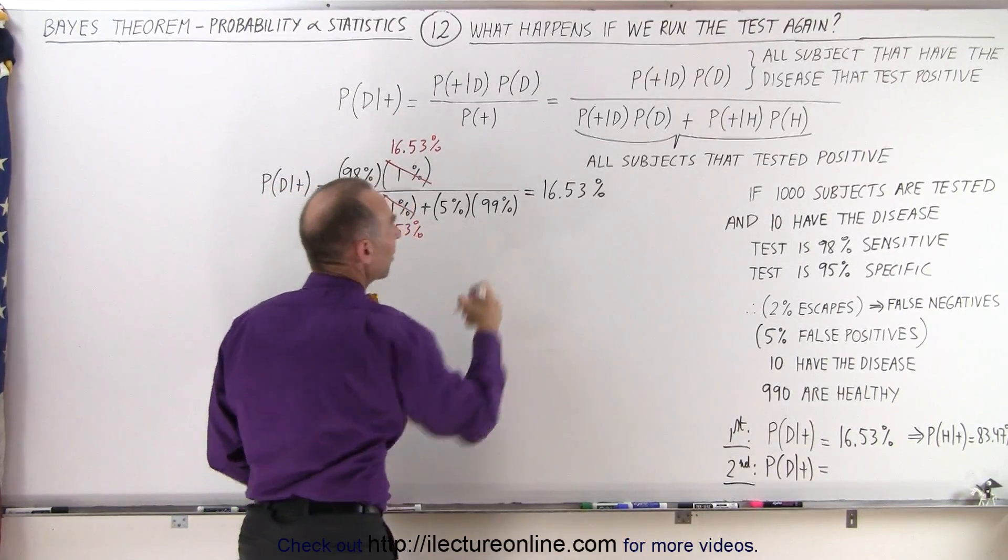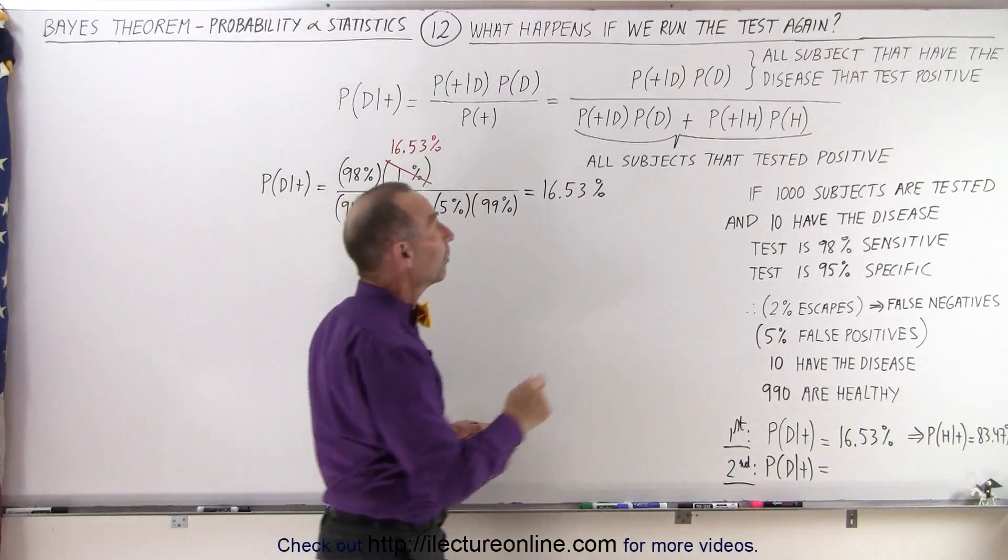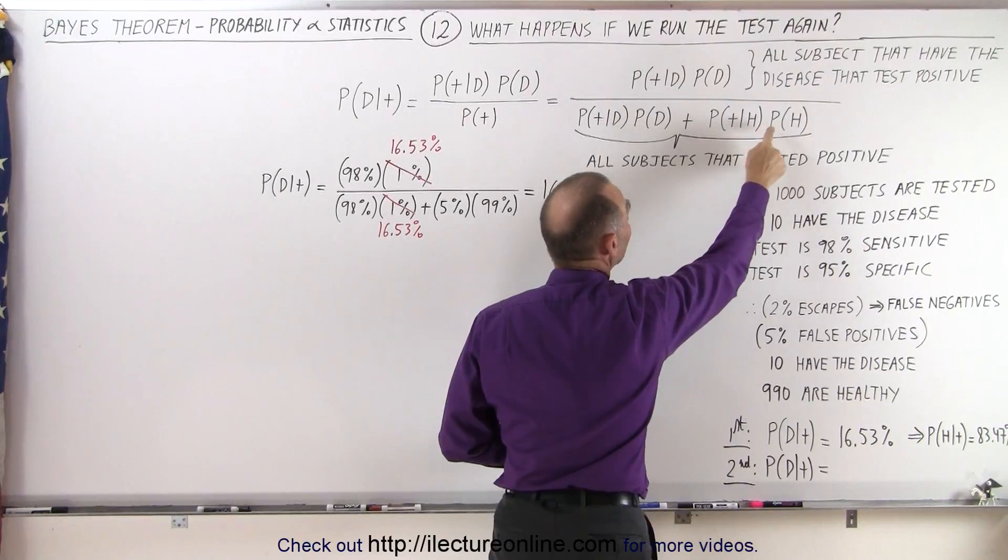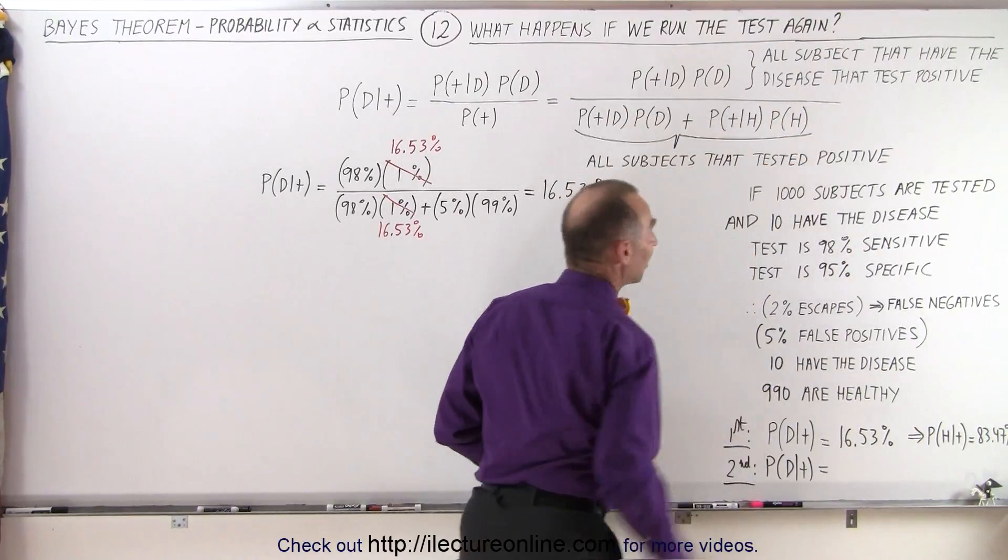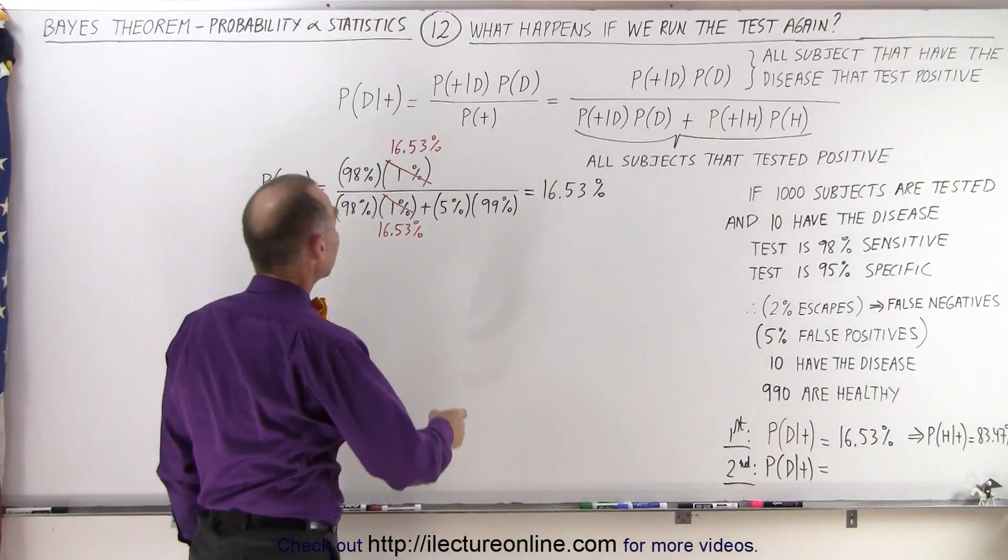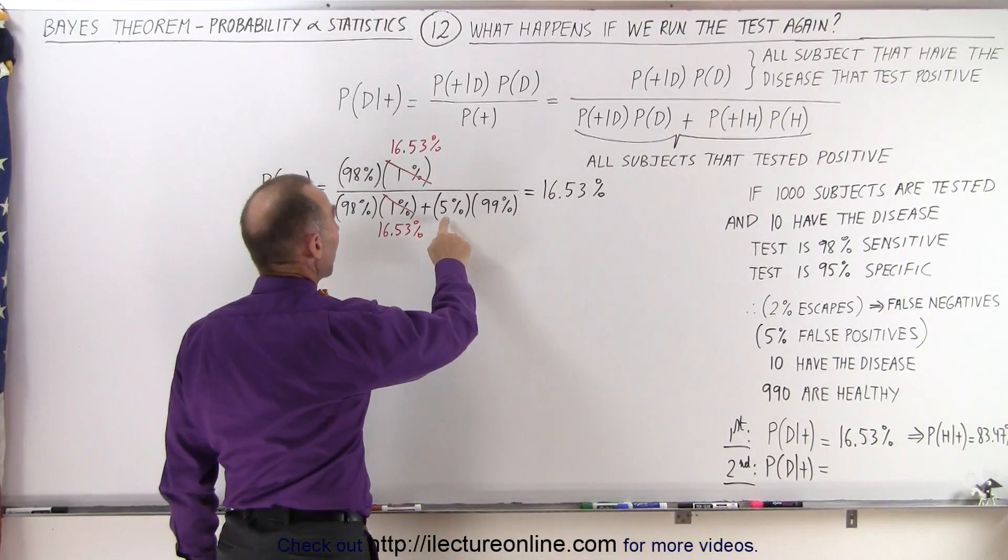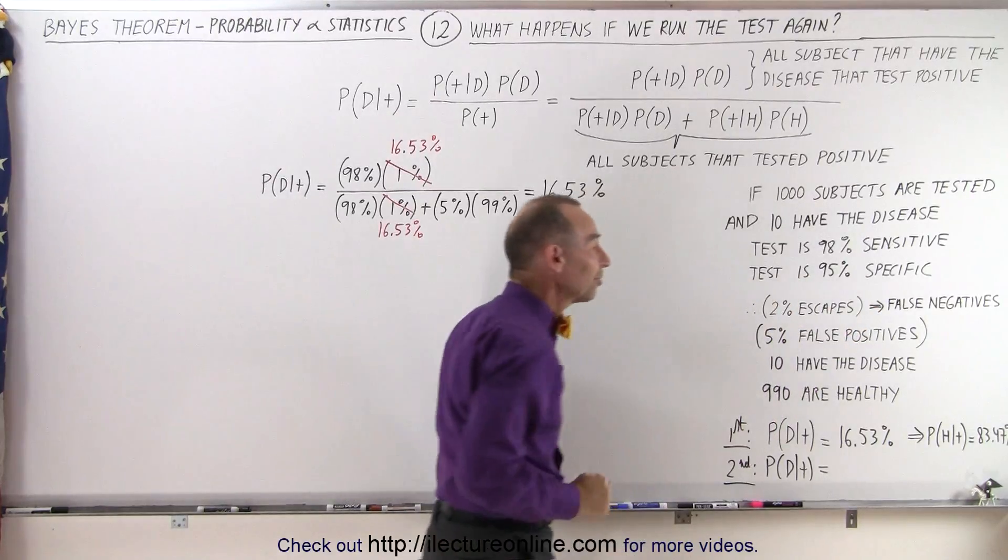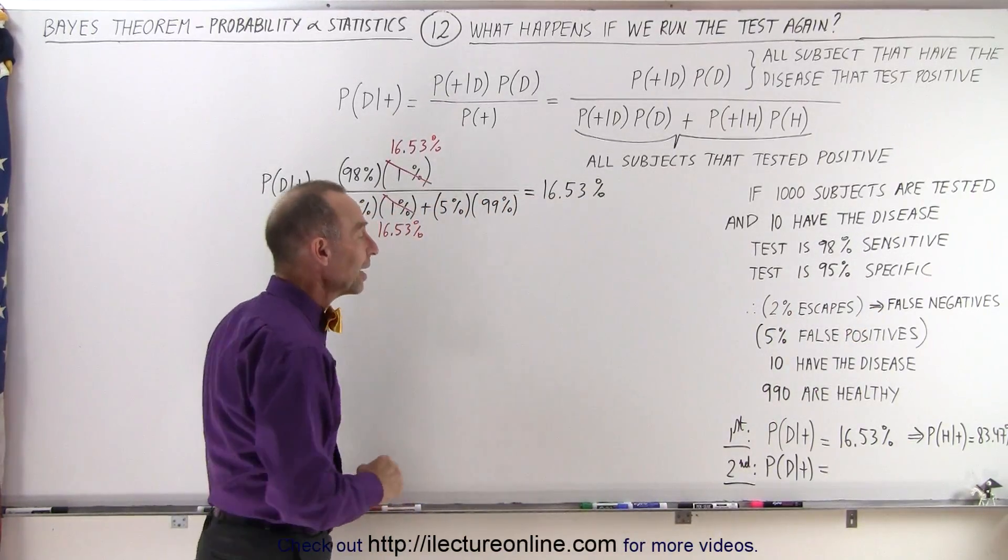Here, this represents the product of the probability that if you test positive, you're healthy and the probability that you are healthy. Well, the probability that you'll be positive when you're healthy, that still stays at 5%. We expect a 5% false positive rate.